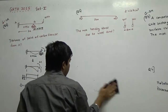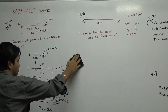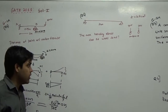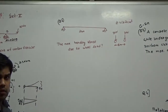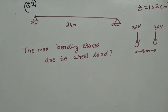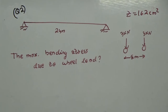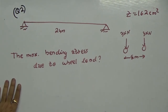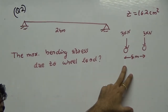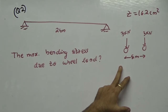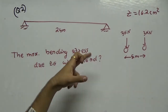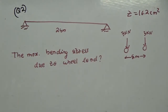This completes the first problem. The second problem is a rolling load problem — you can refer to the lectures on influence line diagrams. It was asked to find the maximum bending stress due to two wheel loads of 3 kilonewton spaced at a distance of 5 meter, rolling over a simply supported beam of 24 meter.